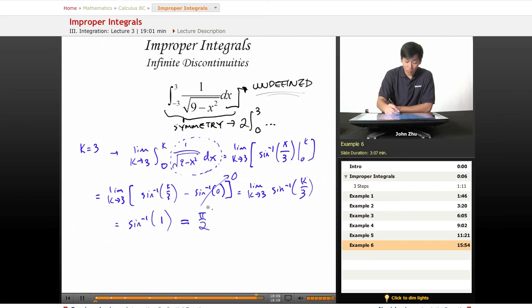So don't forget that we are using a symmetry rule, so the very end result should be 2 times itself to get the answer. So 2 times pi over 2, which equals pi.